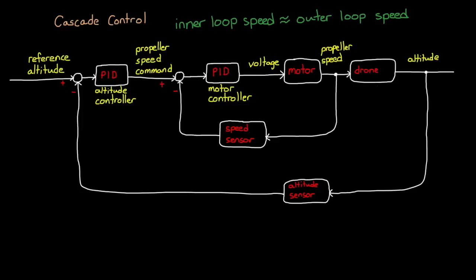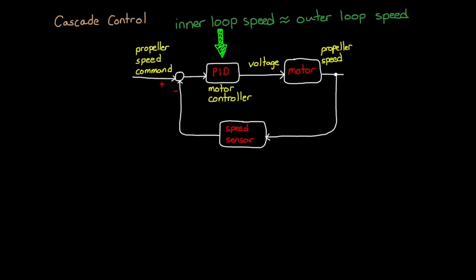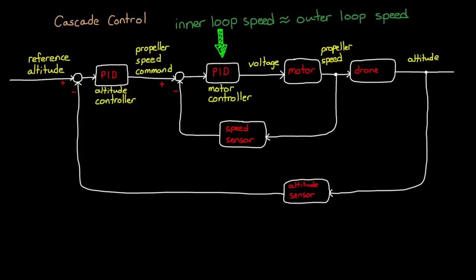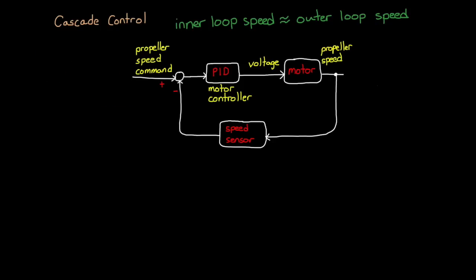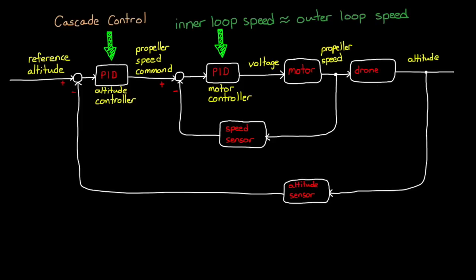All right, the first way is just an iterative approach. This method requires you to tune the inner loop first with a guess, then tune the outer loop while the inner loop is running. If this isn't sufficient for both loops when you're done, then you go back and tweak the inner loop again, and iterate back and forth until you have the performance that you're looking for.